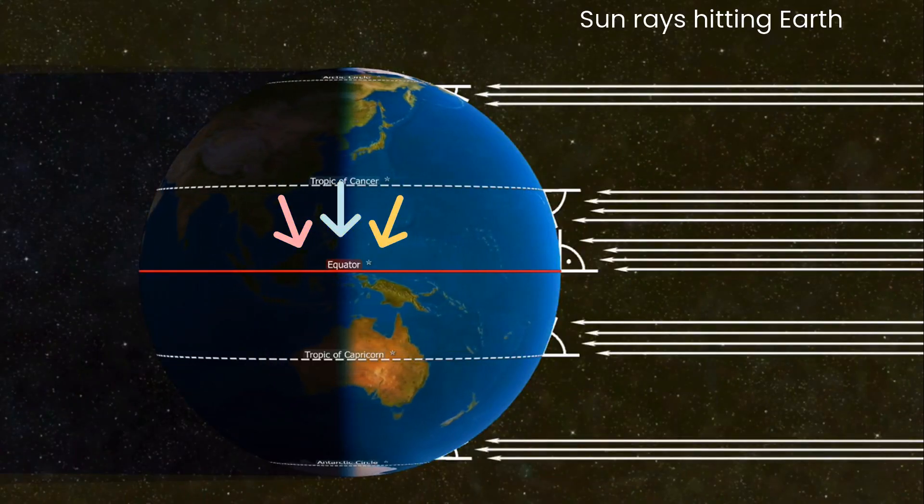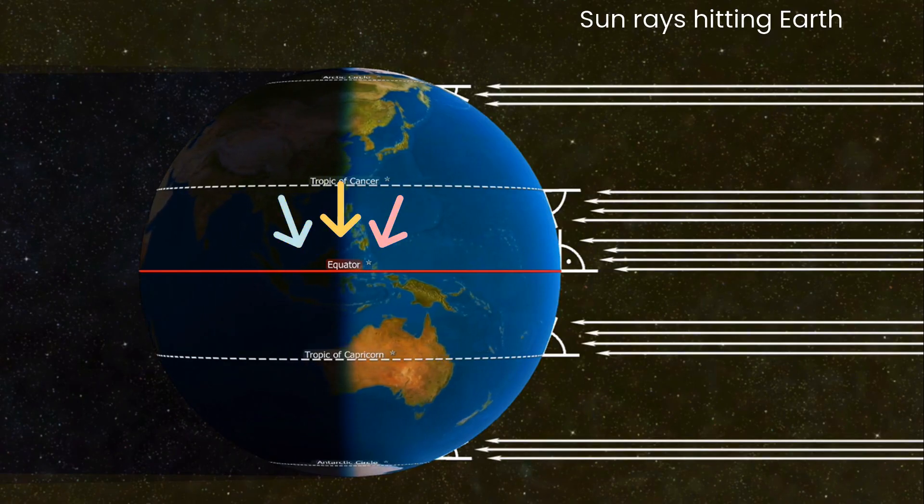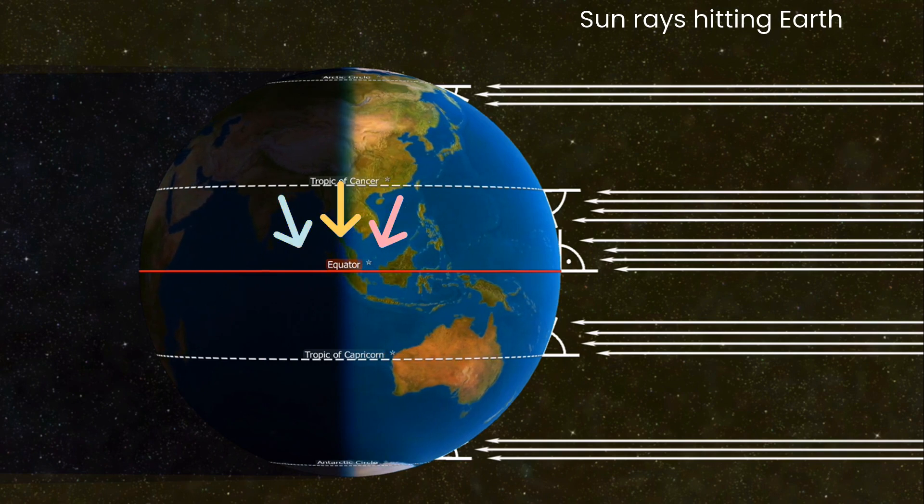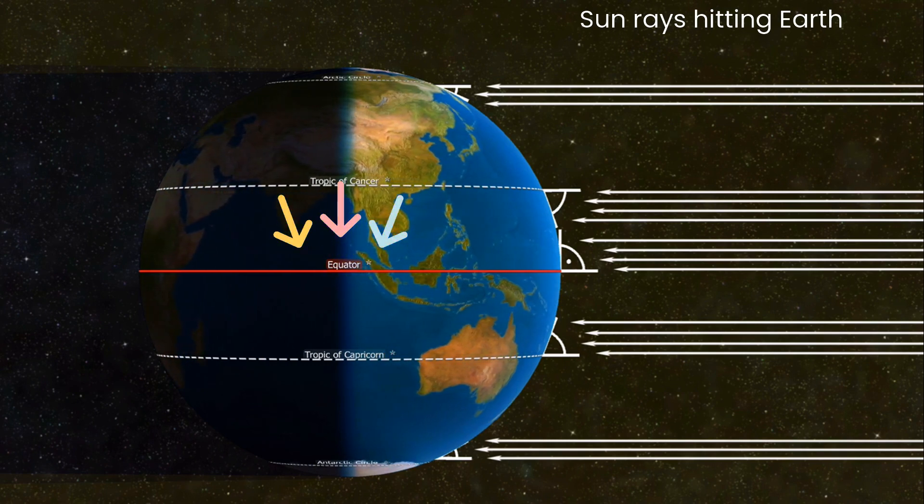That's when the Sun will be directly overhead at noon as seen from Earth's equator. On the day of the March equinox, the Sun crosses the celestial equator, moving from south to north, bringing spring and summer to Earth's northern hemisphere.